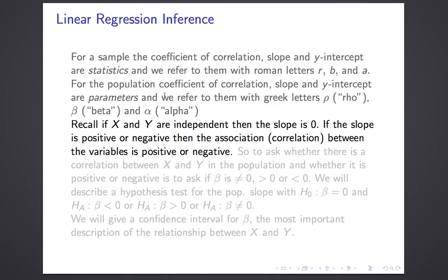A very important point: if x and y are independent — meaning that knowing the value of x tells you nothing even probabilistically about y — then the slope is zero. For instance, when you increase x, you would expect nothing at all to happen to y, neither an increase nor a decrease. Since the slope is the average amount you'd expect y to increase, the slope is zero.